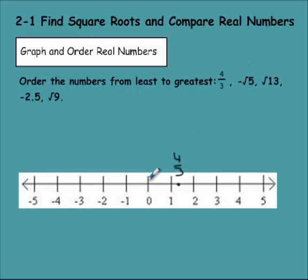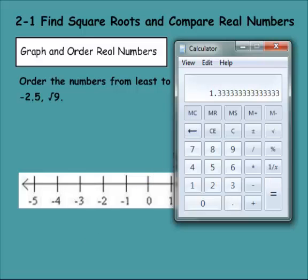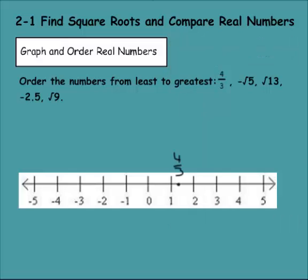Now I have this negative the square root of 5. We would do square root of 5, which would be 2.23. But that's negative, so negative 2.24. I'm going to go negative 2 and then a little bit past that, negative 2.24. That would be the square root of 5 negative.